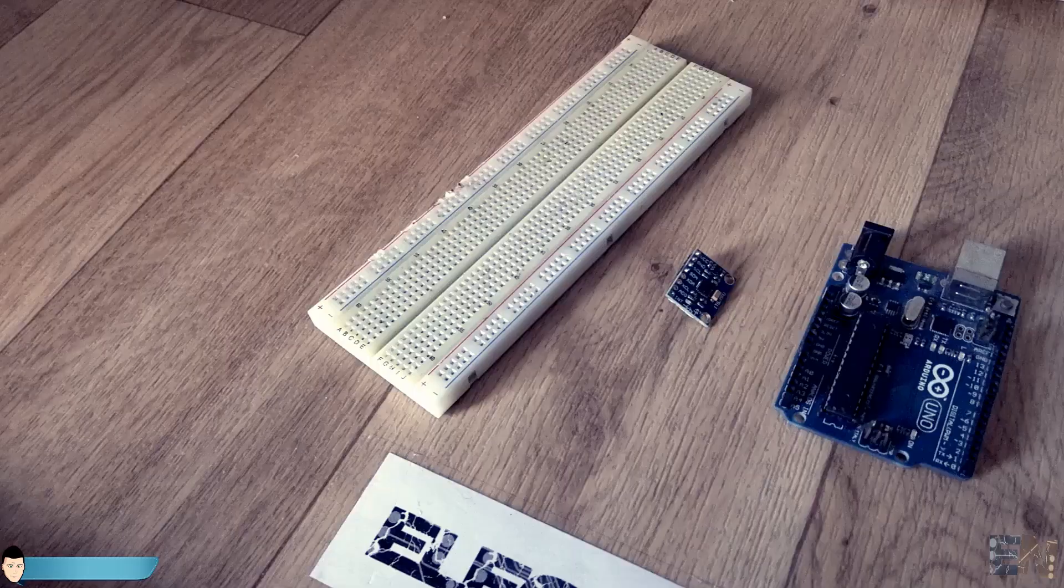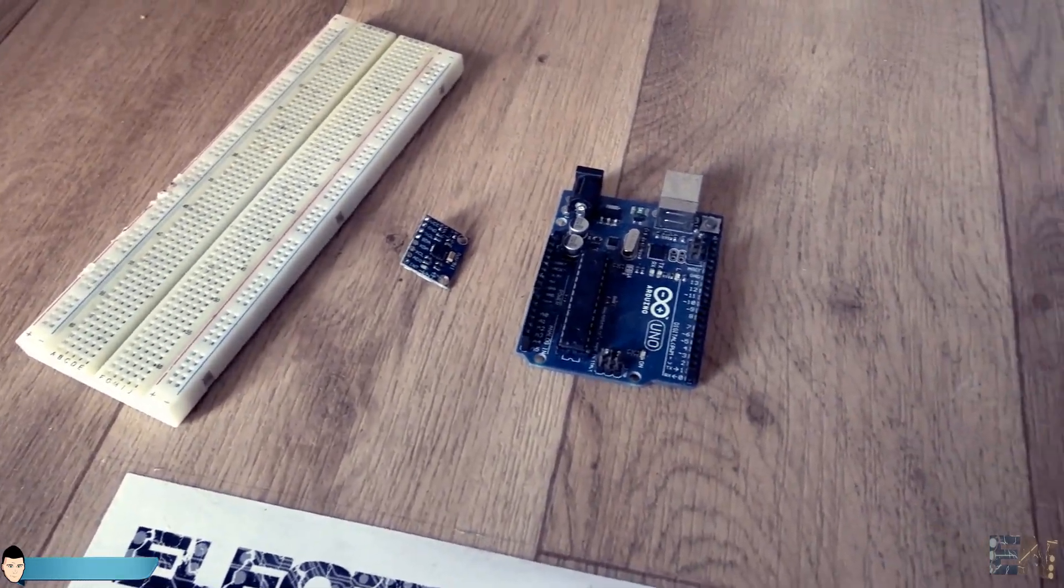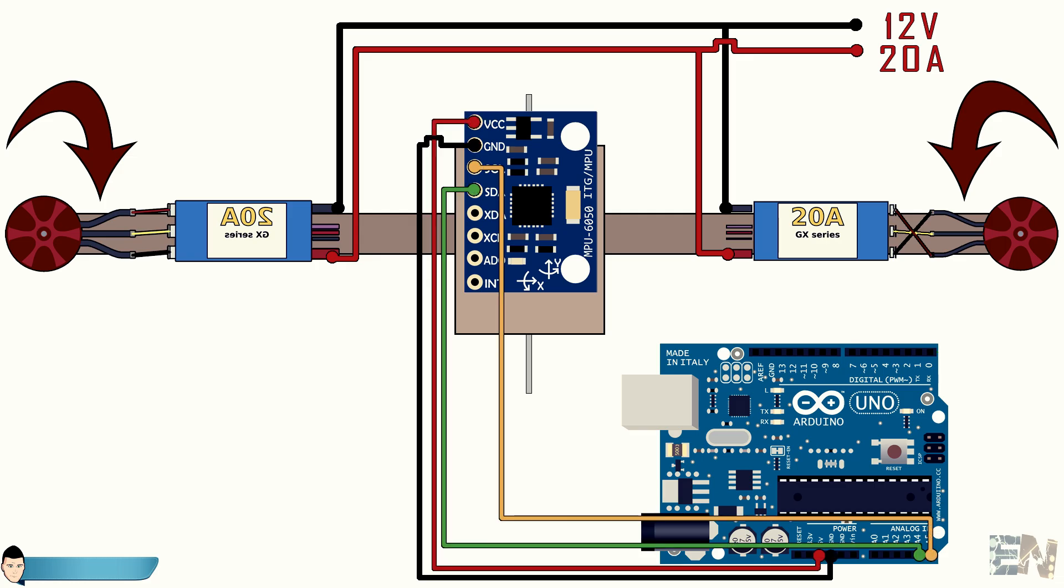Now the next step is to add the Arduino microcontroller and the MPU6050 IMU board. Using a breadboard I make these connections from the Arduino to the module and connect ground and signal to the two ESCs.